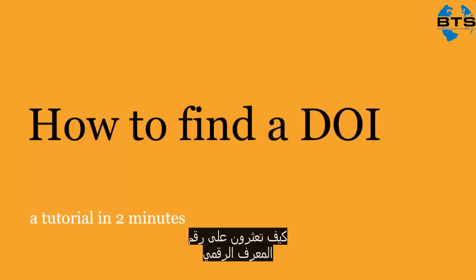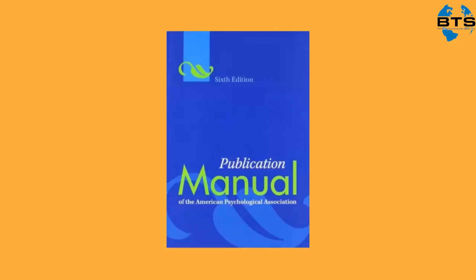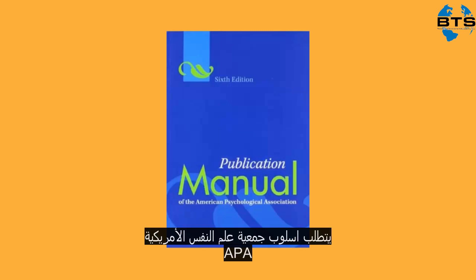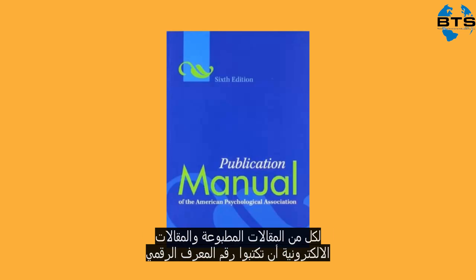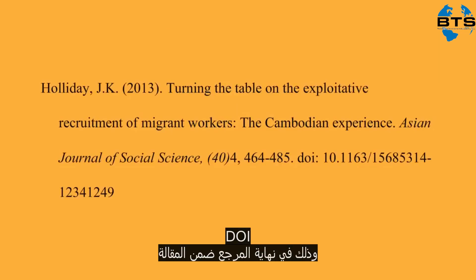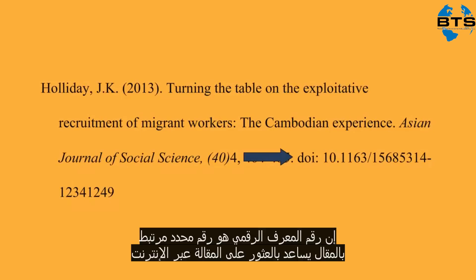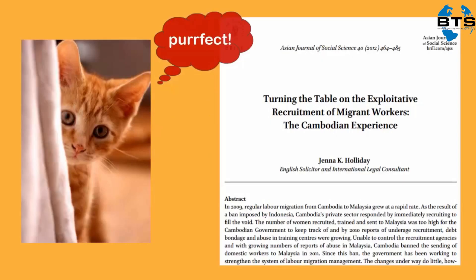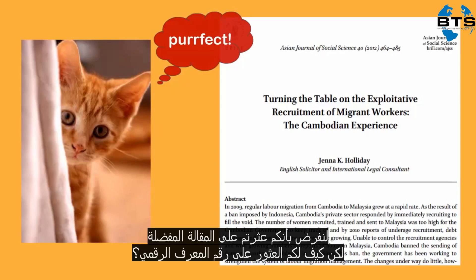For both print and electronic articles, APA Style requires that you include a DOI, or Digital Object Identifier, at the end of your article references. A DOI is a unique number assigned to an article to aid in finding the article online. So you've found your perfect article, but how do you find the DOI?